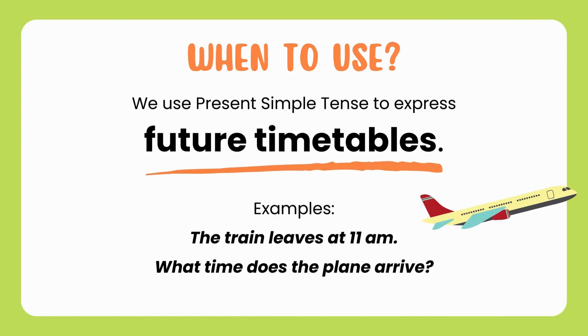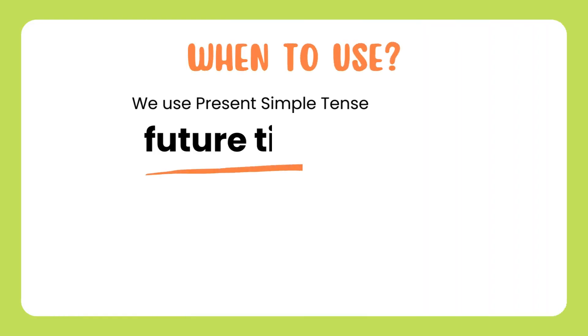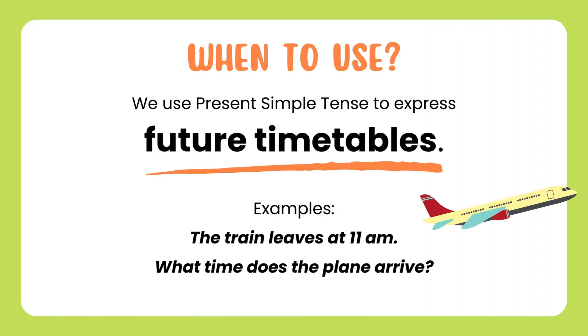When to use? We use Present Simple to express future timetables. Example: The train leaves at 11 a.m. What time does the plane arrive?